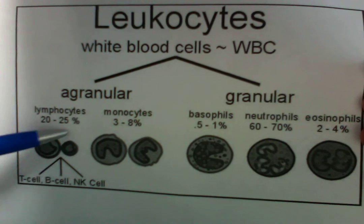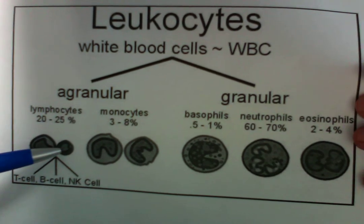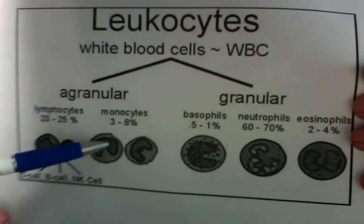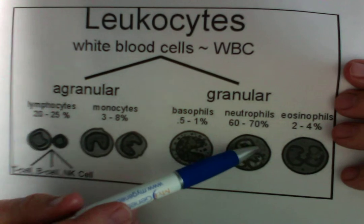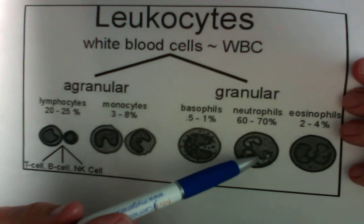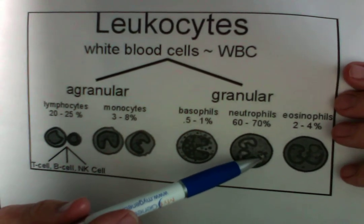Here are lymphocytes — T lymphocytes. They're also involved with monocytes. Now we're talking about another white cell type: the granulocytes, or leukocytes.